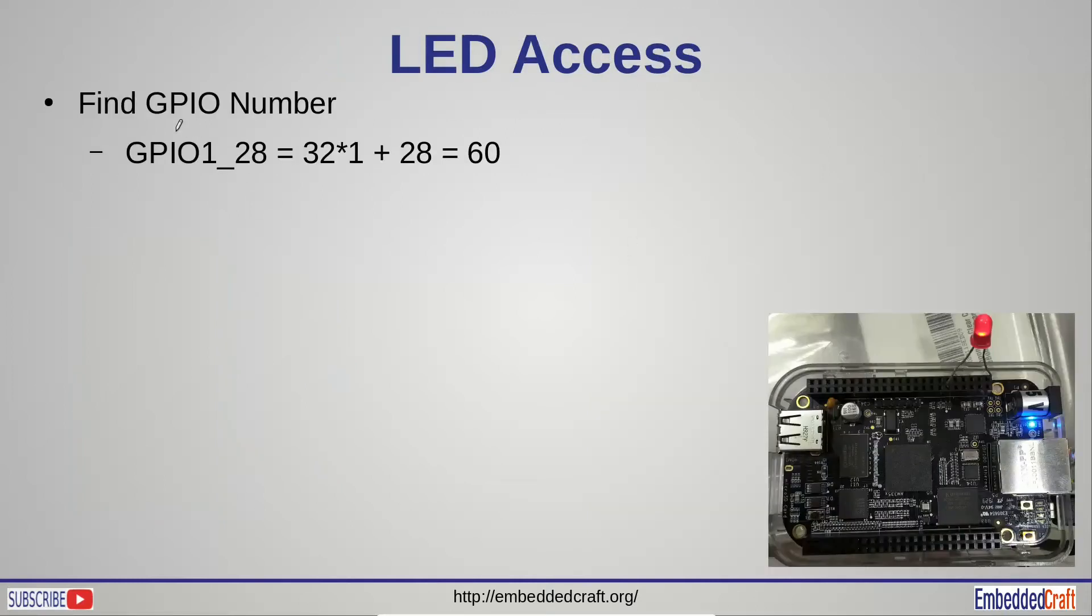To access the LED, first we have to find out GPIO number. It is calculated from GPIO-1, number 28. 1 is multiplied by 32, and then we will add 28. This will become 60. In programming we have to use GPIO-60.